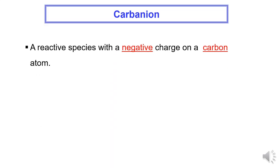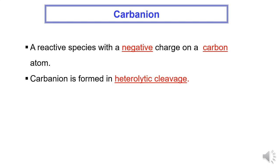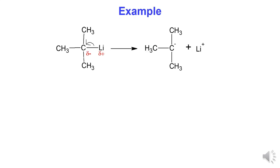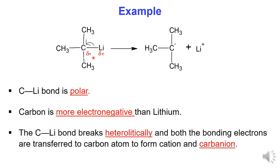Carbanion is a very reactive species with a negative charge on a carbon atom. It is formed in heterolytic cleavage. For example, a bond between chlorine and lithium atom is a polar bond. Carbon is more electronegative than lithium, so the polar bond is broken heterolytically and both bonding electrons are transferred to carbon atom to form a cation (lithium ion) and a carbanion with a negative charge on the carbon atom.